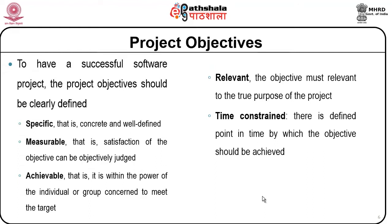To have a successful software project, the project objectives should be clearly defined, as this has an impact on quality. They should be specific — that is, concrete and well defined; measurable — satisfaction of the objective can be objectively judged; achievable — within the power of the individual or group concerned; relevant — the objective must be relevant to the purpose of the project; and time-constrained — there is a defined point in time by which the objective should be achieved.